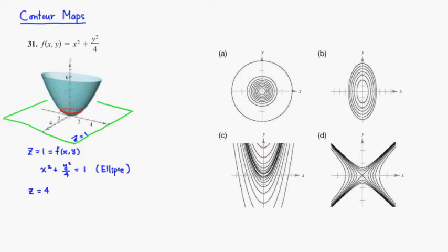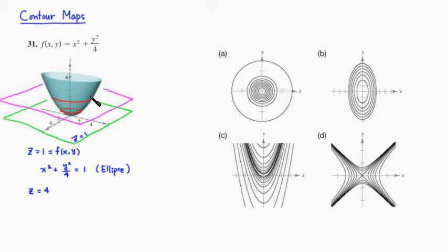Z equals 4 would be a plane parallel to the other one, but it's going to be at z equals 4 — a little bit higher up. If you cut it by z equals 4, you will still have this kind of a circular intersection, but it's going to be slightly bigger. The equation: replace f of x, y by 4, so you get x squared plus y squared over 4 equals 4.